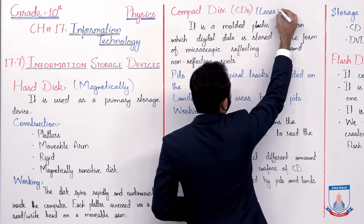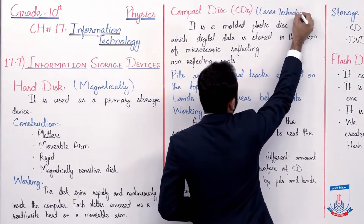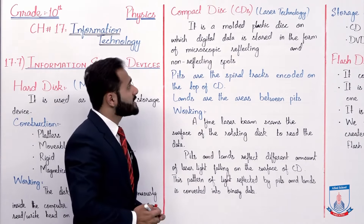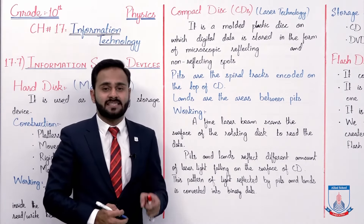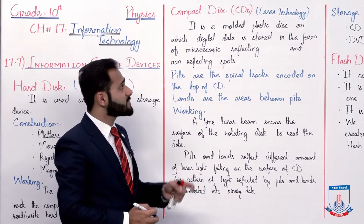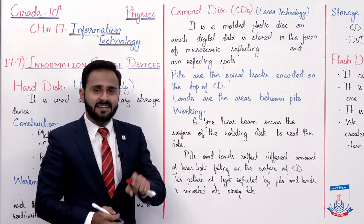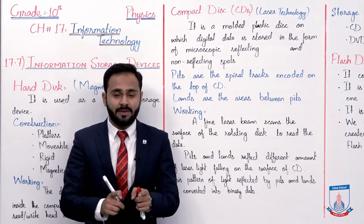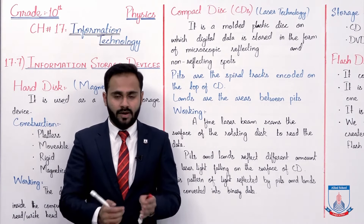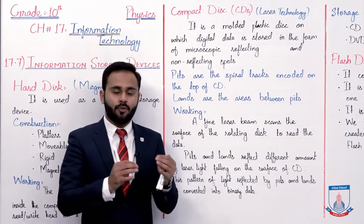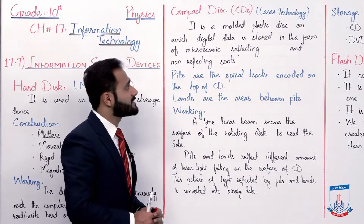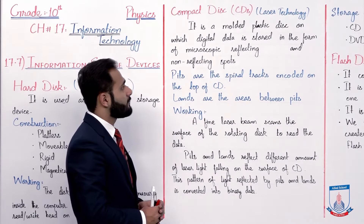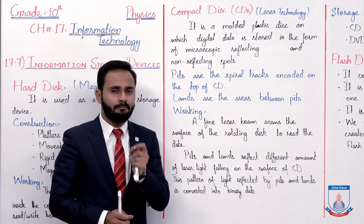The data stored on a CD is digital, meaning it is stored in binary form. Binary means 1 and 0. This digital data is stored in the form of microscopic reflecting and non-reflecting spots. I am using the word microscopic here.